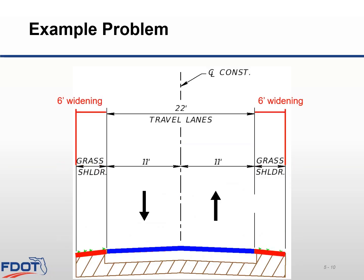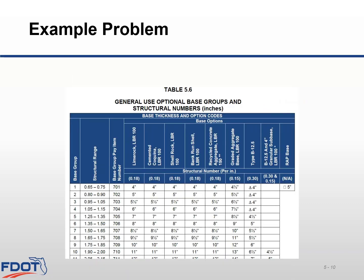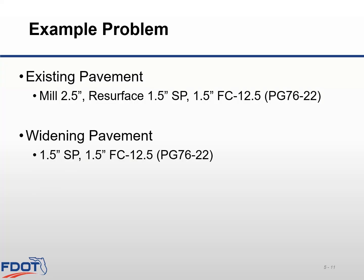Since we are only widening 6 feet total on either side of the road, it's a pretty tight spot to fit construction equipment into. So for this particular project, we're going to call for using black base for constructability purposes. Going back to our optional base group table, we look at base group 9 for a structural value of 1.8, and finding the column with type B12.5, we see that we need to design with 6 inches of type B12.5 for our widening. Now that we know our base material and thickness, let's look at our asphalt layers. The milling recommendation for this project is to mill 2.5 inches and place back 3 inches of asphalt. Our widening design needs to match the pavement layers being placed on the existing roadway, so we will use 1.5 inches of type SP and 1.5 inches of FC 12.5 with PG 76-22.